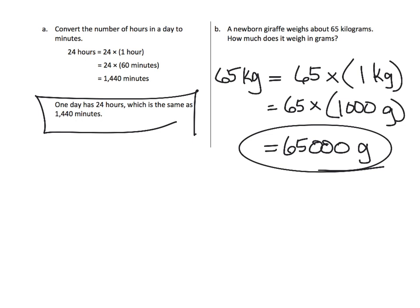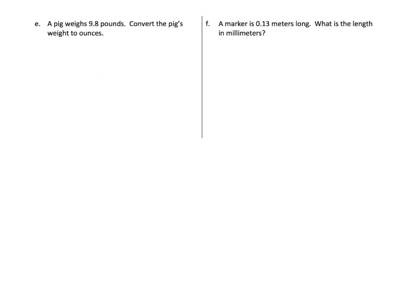Now, we want to give it a concluding sentence. So, we could say that 65 kilograms is the same as 65,000 grams. So, that's our concluding sentence. We're going to connect and say that 65 kilograms is the same as 65,000 grams.